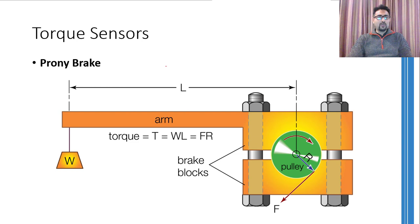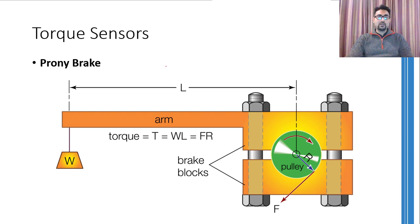Another famous arrangement of the Prony brake is shown here. It has a similar working principle but can be more easily used with engines. By pressing a pedal, more friction is applied on the rotating shaft, reducing its speed until it can be stopped. Tractors even nowadays use these kinds of brakes.